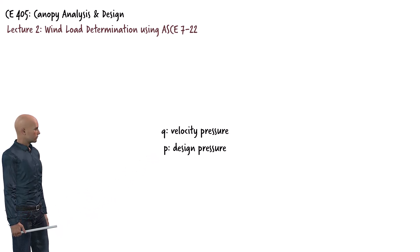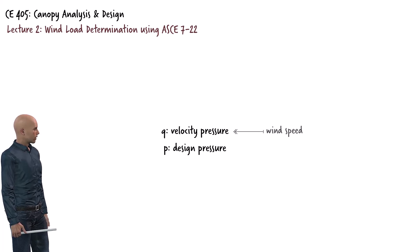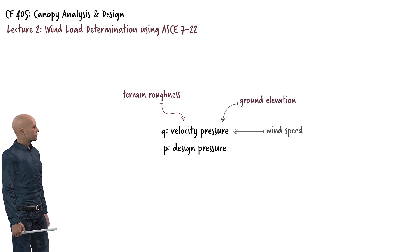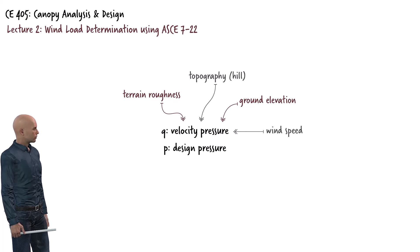Let's start with velocity pressure. Simply put, velocity pressure is based on the wind speed, but it's adjusted to account for the characteristics of the site's terrain. To calculate Q, we need more than just the wind speed. We also need information about the terrain's roughness, the ground elevation, and other topographical factors, such as whether the structure is located on a hill. In other words, Q focuses on the site's location and its surroundings, not the structure itself.